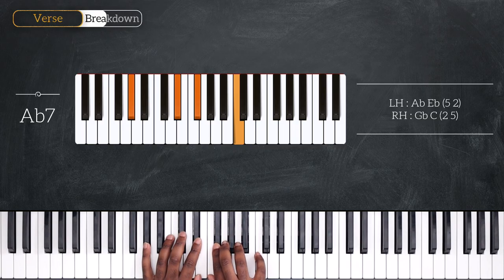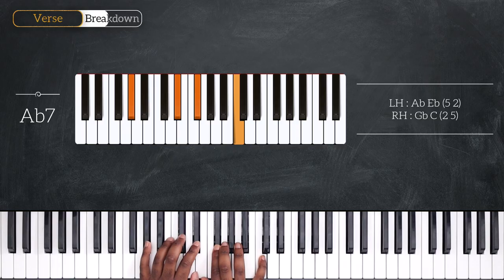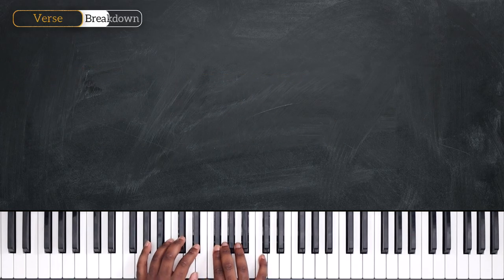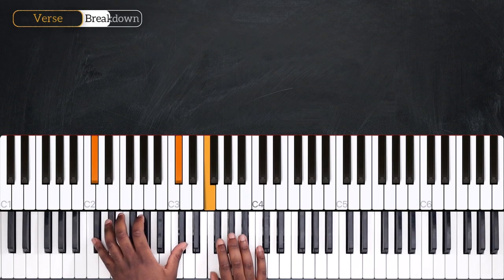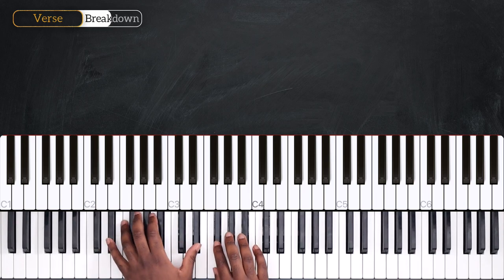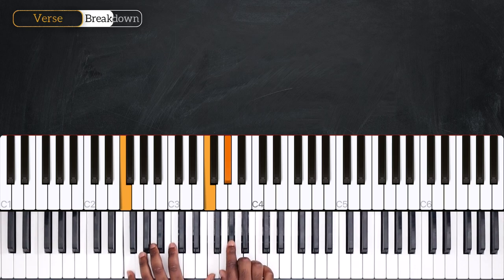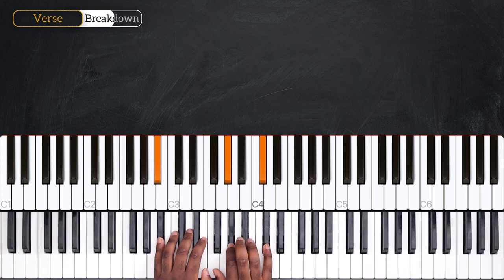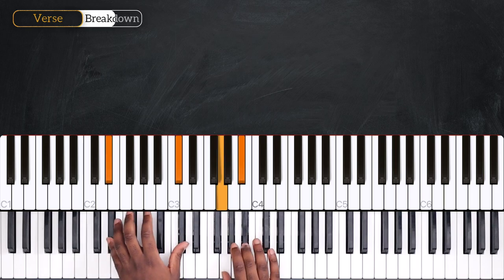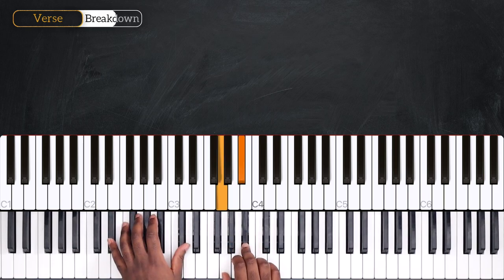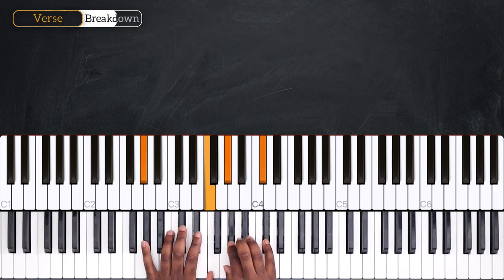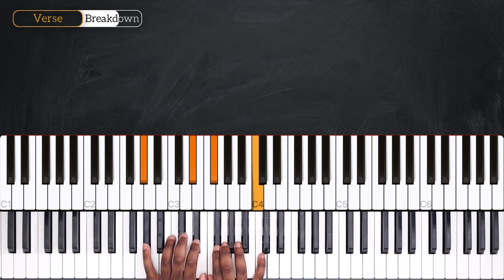We have the 7th and the 3rd. Once again, we have Db, Eb minor, Db over F, Bb minor 7, Eb7, Ab—sorry, Db over Ab, and then Ab7.